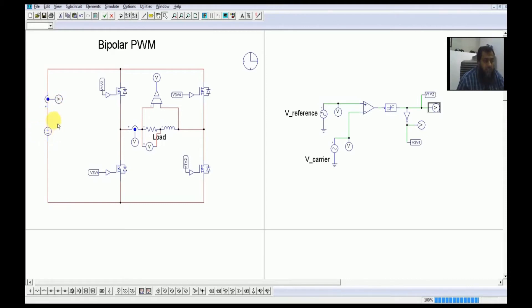First thing is that we need to develop some gating signal for these switches. So for this switch V1 and V2, this is V1 and this is V2.